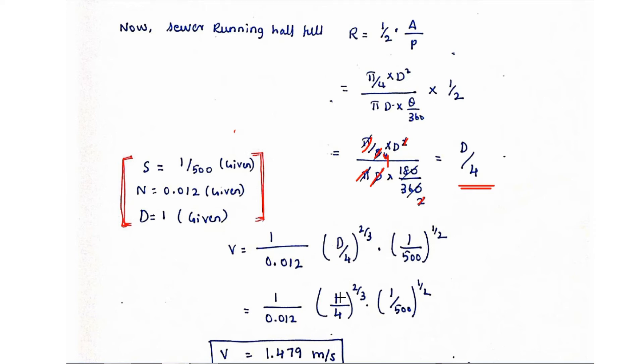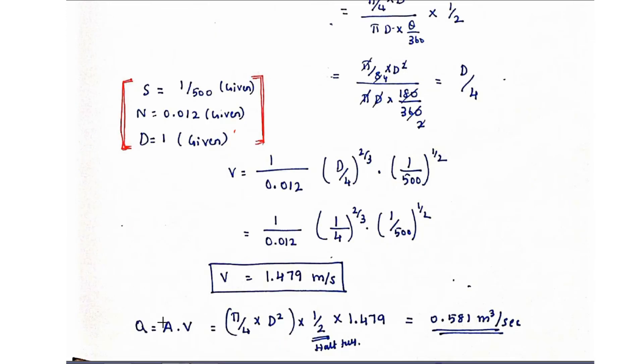Now we substitute d equals 1 and we got the value of v equals 1.47 meter per second. Now we are going to find out the quantity.